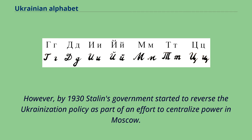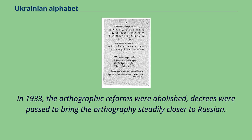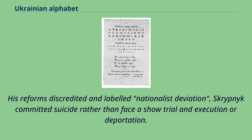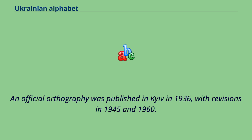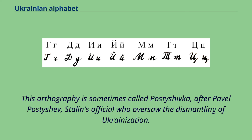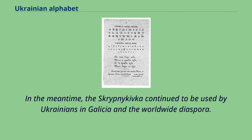However, by 1930 Stalin's government started to reverse the Ukrainization policy as part of an effort to centralize power in Moscow. In 1933, the orthographic reforms were abolished, and decrees were passed to bring the orthography steadily closer to Russian. His reforms were discredited and labeled nationalist deviation; Skrypnyk committed suicide rather than face a show trial, execution, or deportation. The Ukrainian letter ge and phonetic combinations were eliminated, and Russian etymological forms were reintroduced. An official orthography was published in Kyiv in 1936, with revisions in 1945 and 1960, sometimes called Postyshevka after Pavel Postyshev. The Skrypnykivka continued to be used by Ukrainians in Galicia and the worldwide diaspora.